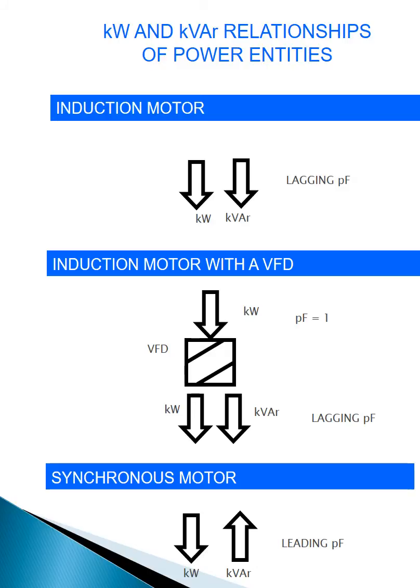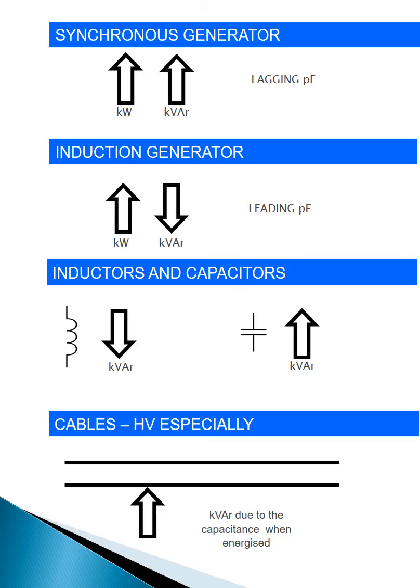The last example is a synchronous motor that has a leading power factor, and hence the reversal of the VAR from the induction motor representation. Here are another set of examples. For a synchronous generator operating in the lagging power factor mode, the kilowatt and kVAR vectors are both flowing out of the generator, as per our definition. An induction generator transmits kilowatts but absorbs kVARs, i.e. it has a leading power factor. The last three examples are the representation of items that provide or absorb VARs with no kilowatts involved.